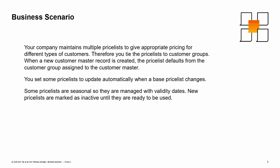You set some price lists to update prices automatically when a base price list changes. For example, you base some sales prices on a price list based on purchase price. Some price lists are seasonal, so they are managed with validity dates. New price lists are marked as inactive until they are ready to be used.